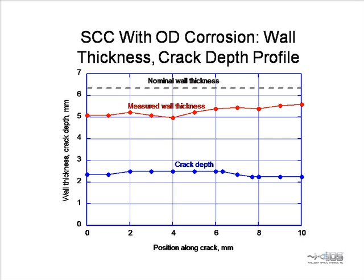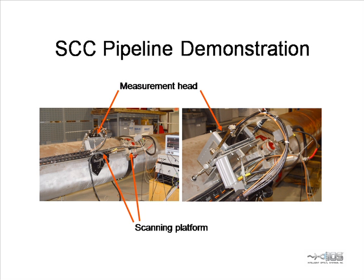We scanned another crack at a position where there was significant OD corrosion. We were able to measure the wall thickness along with the crack depth. This enables a realistic determination of the crack depth as a fraction of the remaining wall. We participated in an industry demonstration of a scanning laser ultrasonic system in Houston, Texas. A measurement head was mounted in a motorized platform that could be scanned axially and circumferentially. Since the cracks were mostly axial, this was the common scan direction.